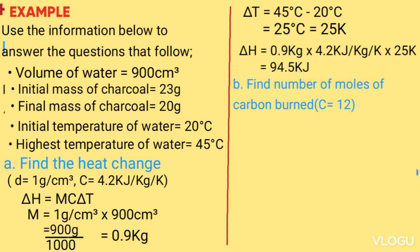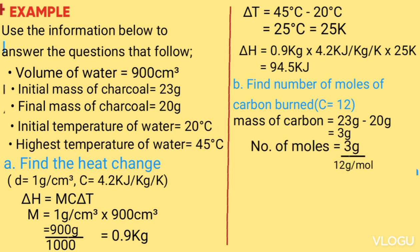Part b: Find the number of moles of carbon burned. Number of moles is given by mass in grams of fuel burned divided by molar mass. The mass of fuel burned is initial mass minus final mass which is 23 minus 20, which is 3 grams. So number of moles equals 3 grams divided by 12 grams per mole, that is the same as 0.25 moles.